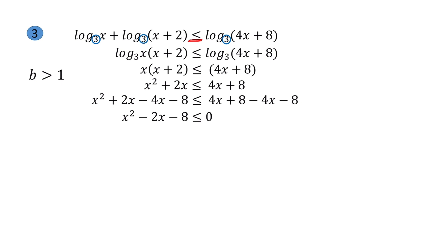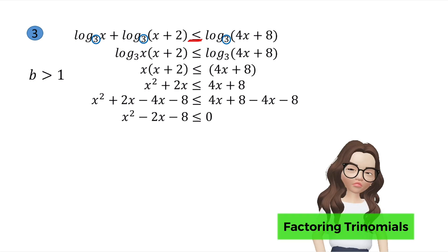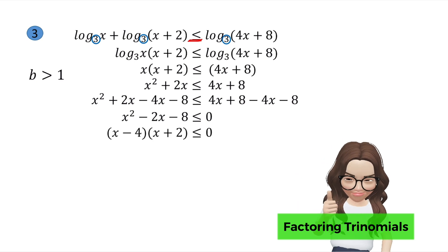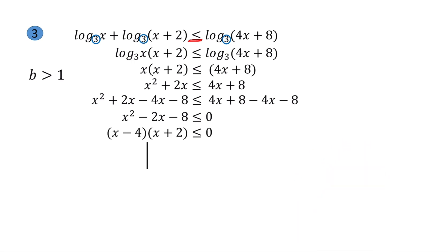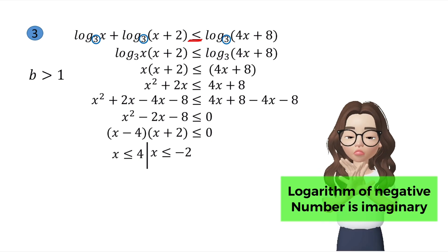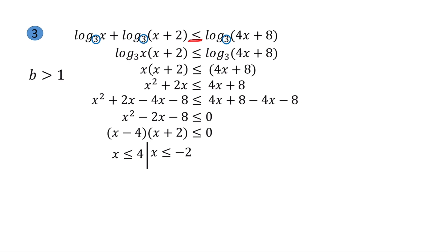Since we have a squared term, we expect two values for x: x ≤ 4 and x ≤ −2. The region from negative infinity to −2 is excluded because substituting those values gives an undefined answer. To find the other boundary, take each logarithmic expression and determine where the value is greater than 0.